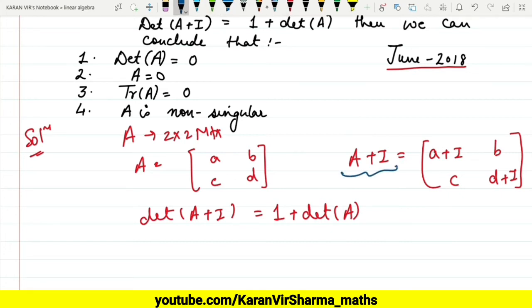We are given that det(A+I) is what? (a+I)(d+I) - bc. So let's solve this. This will be ad + a + d + I² - bc.